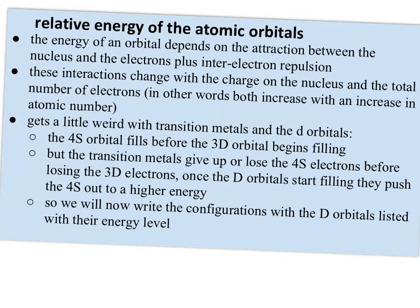So relative energy of the atomic orbitals. Relative energy is just compared to each other. So the energy of a 3p orbital for any one kind of atom, so let's say aluminum, any electron in the 3p orbital will have the same energy. But if we go to a bigger element like calcium, those 3p orbitals in calcium might have a different energy than they do in aluminum. So the energy of an orbital depends on the attraction between the nucleus and the electrons, plus the inner electron repulsion between the electrons. So these interactions are going to change with the charge on the nucleus and the total number of electrons. So in other words, both are going to increase. The charge on the nucleus will increase as the atomic number increases, and so will the total number of electrons as the atomic number increases.